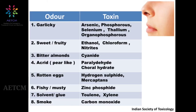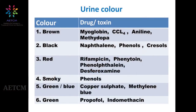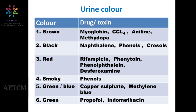Breath odor is another important diagnostic clue. A garlicky odor suggests organophosphorus, thallium, or arsenic. Sweet or fruity odor suggests ethanol, chloroform, or nitrates. Bitter almond odor is suggestive of cyanide poisoning, and fishy odor suggests zinc phosphate. Urine color changes are also relevant — rifampicin causes red urine and phenols cause smoky urine.